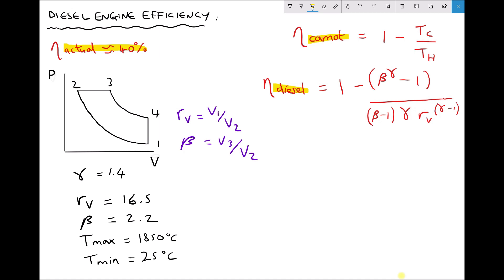So pictured on the left hand side of the screen we have the PV diagram for the diesel cycle and directly underneath we have some data that we're going to use to calculate our efficiencies.